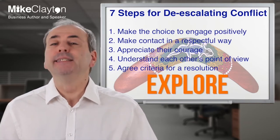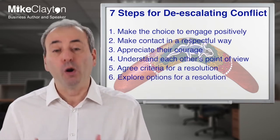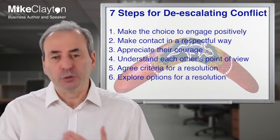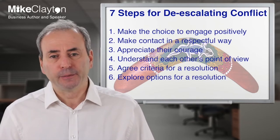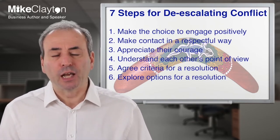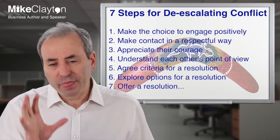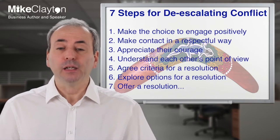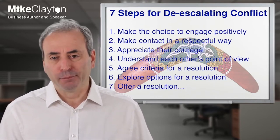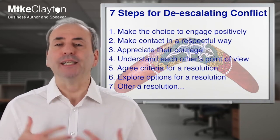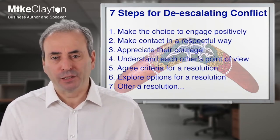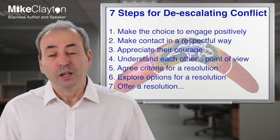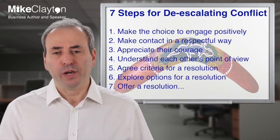Once you've built rapport it's time to collaborate, starting at step five: work together to agree the criteria for a good resolution — what will success look like? Make suggestions, listen to suggestions, and hone it down to a reasonable definition of success that is a win for both of you. Step six is to explore options for resolution: what could we do, what could each of us offer? Step seven is to take the solutions discussed, offer a possible resolution, and when accepted, work together to implement it and agree a plan.